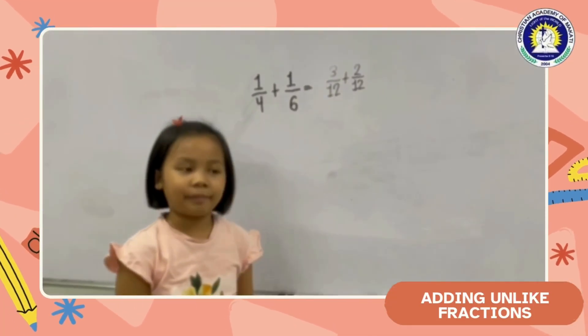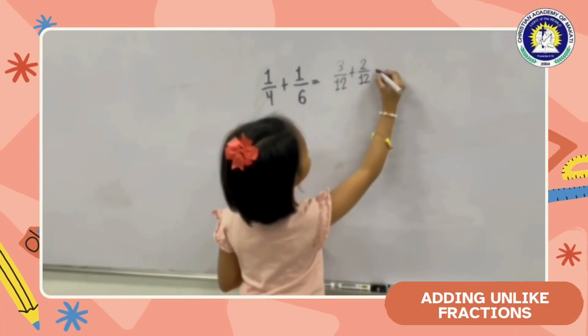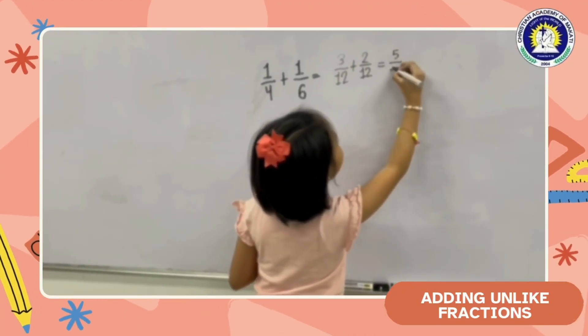So the last step we have to do is add the fractions. So 3 over 12 plus 2 over 12 equals 5 over 12.